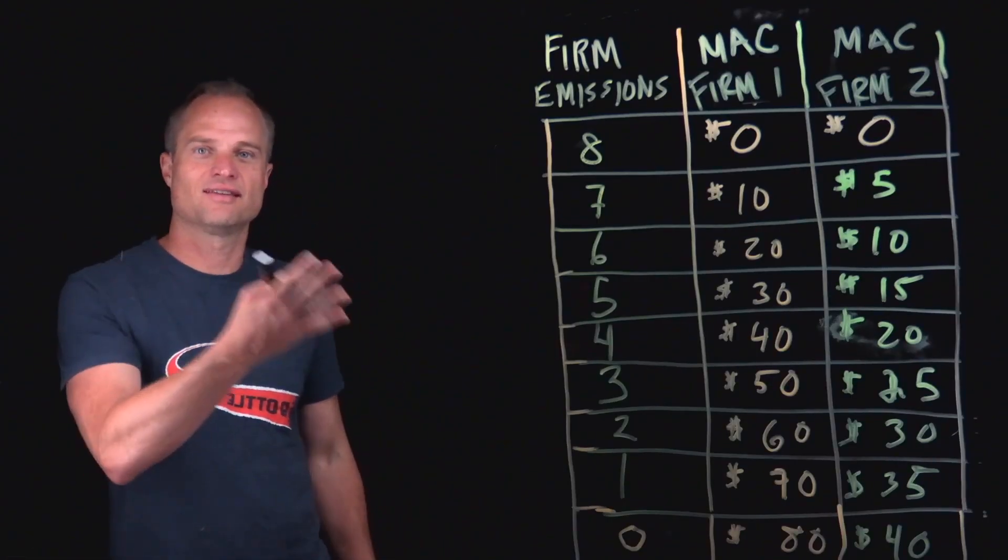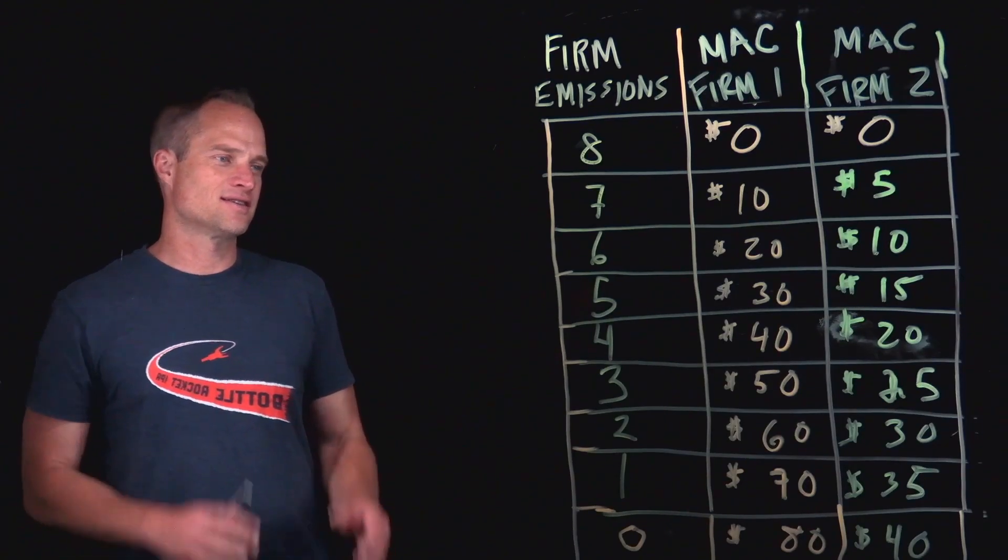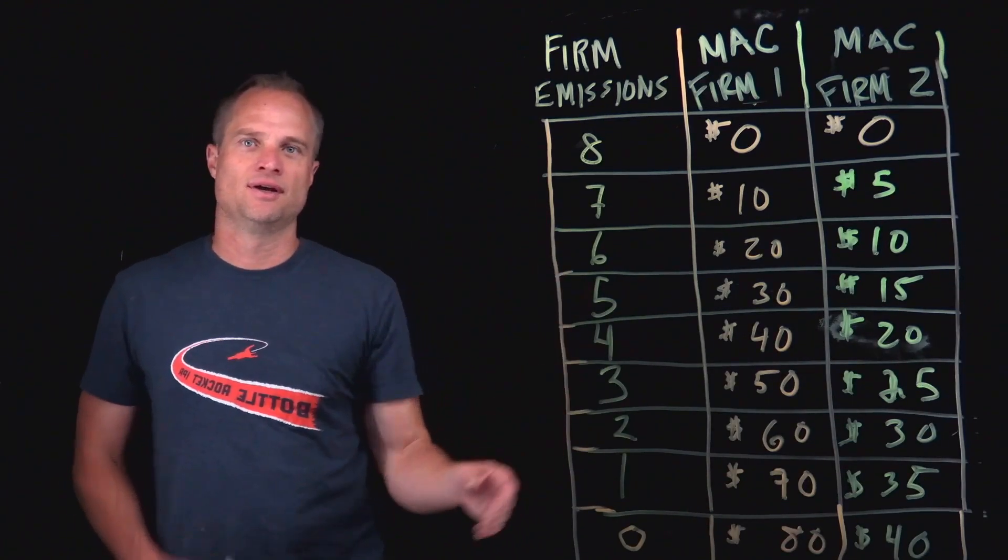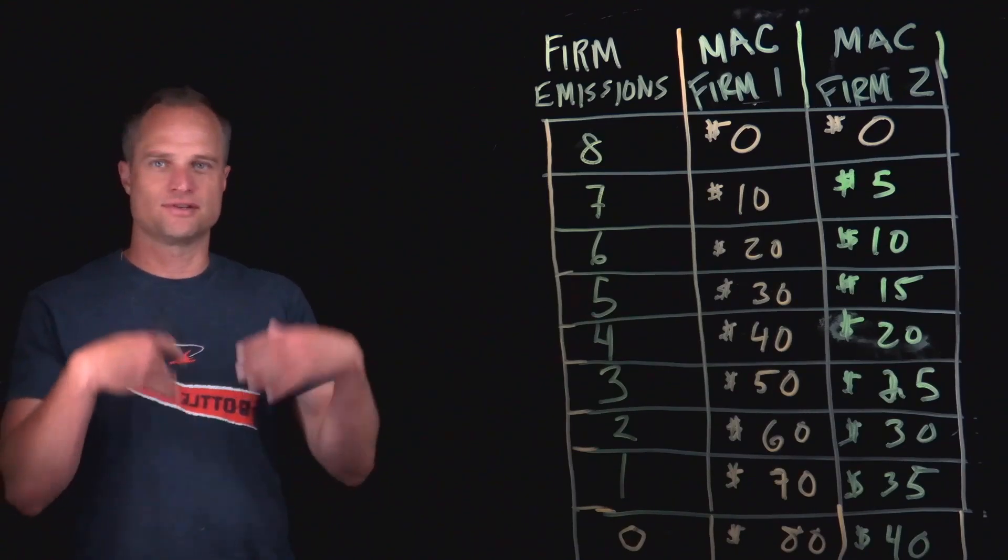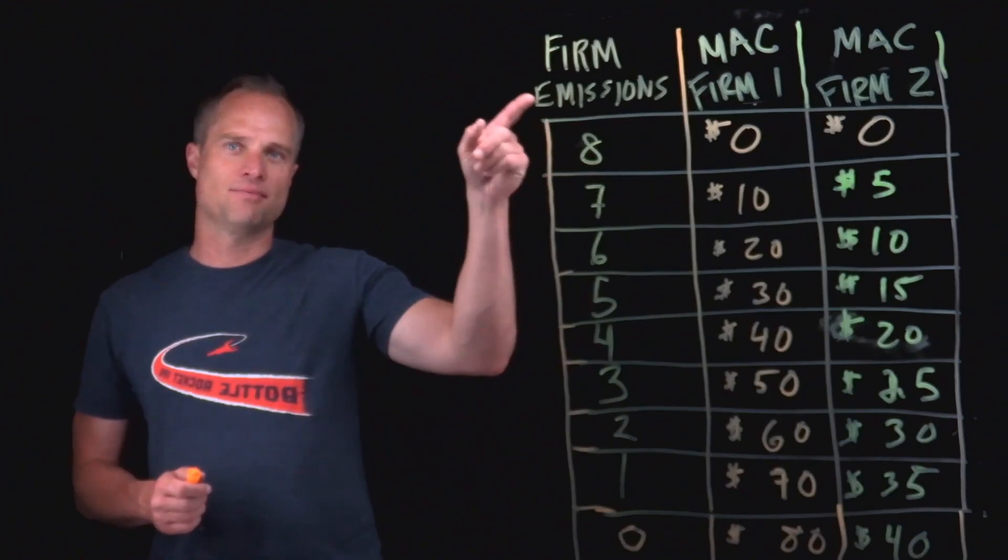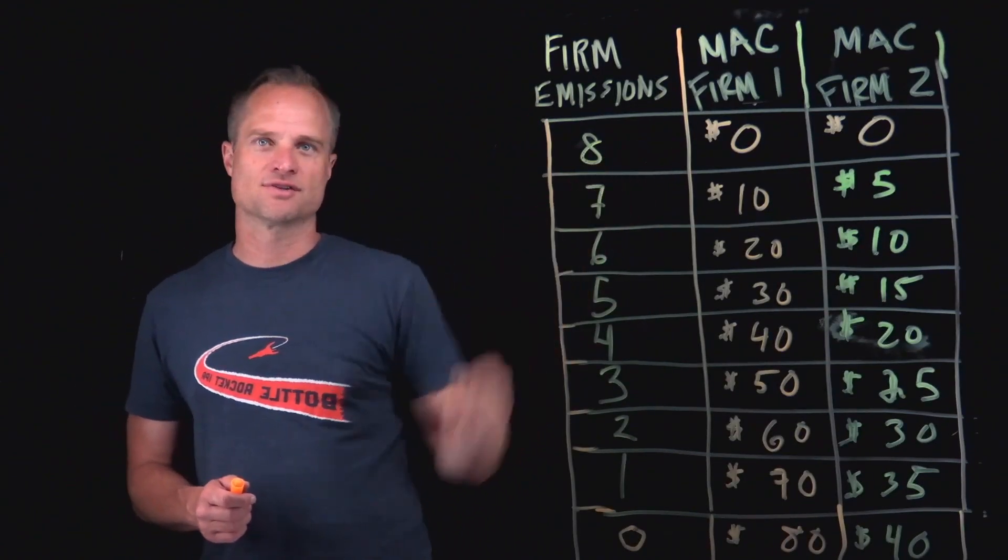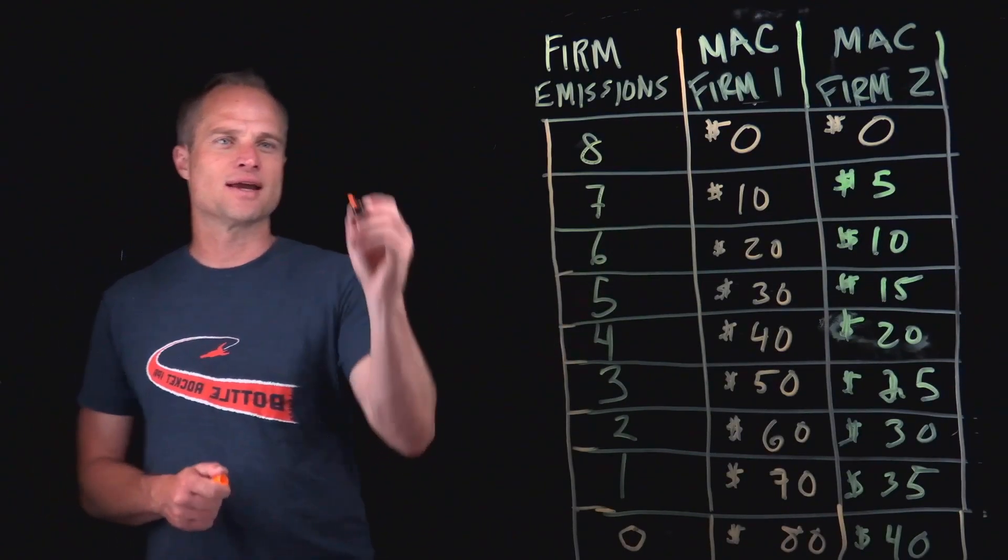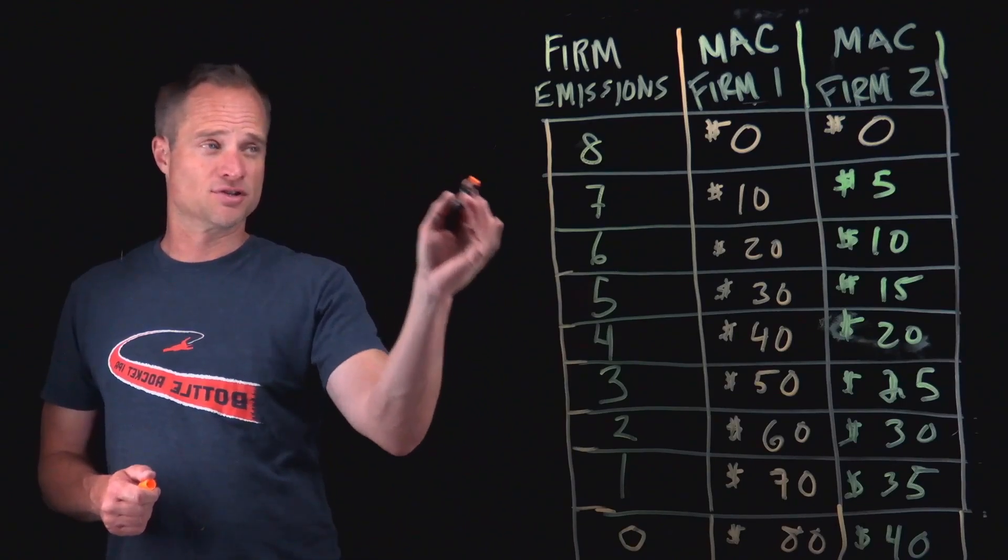Guys, look at my fancy table I just drew. This is a table where we have the first column of emissions, units of emissions, you can think metric tons. The second column is the marginal abatement cost for firm one. You can see it starts at zero. And so in an unregulated world, given this table, you could just infer it.